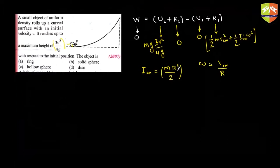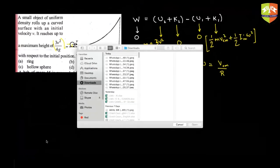That result — I_cm = m·r²/2 — is true for the disk only. This problem came in the year 2007. Any doubts on this? Please ask quickly before we move to the next one.